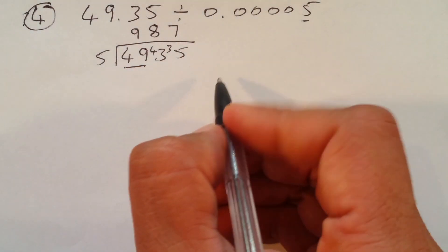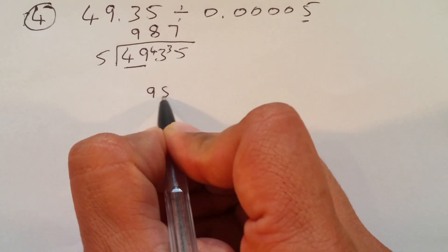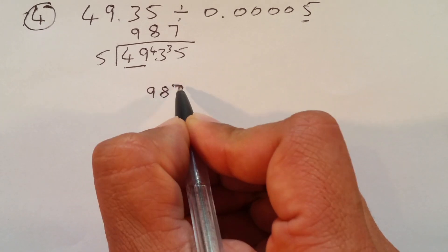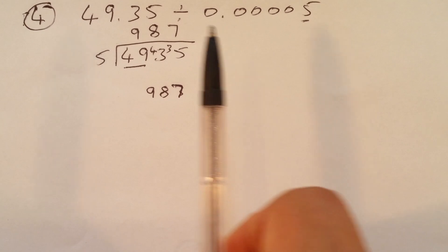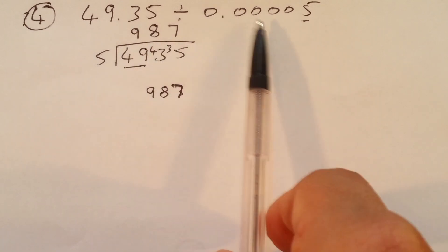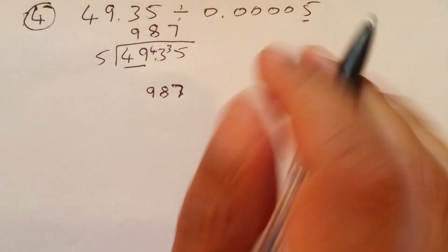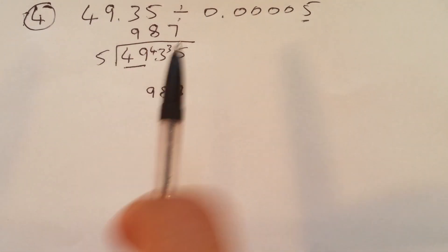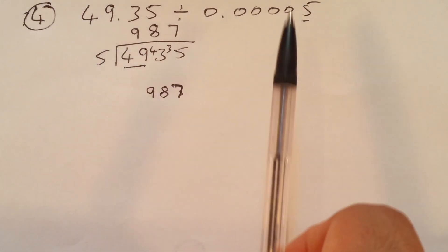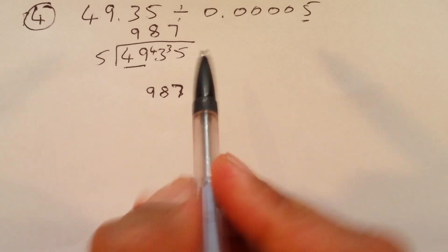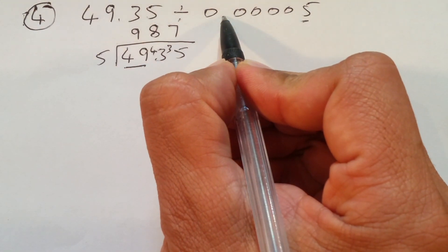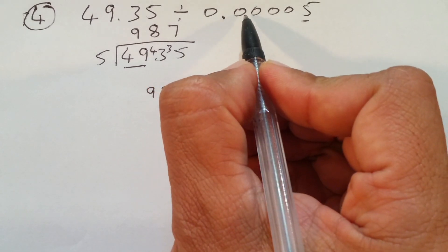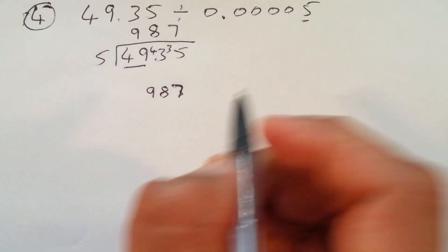So, the answer what we got is 987. Now, what you have to see here is the decimal placements here. After decimal, carefully listen to me what I'm doing now. After decimal, on your right hand side, you count after decimal how many numbers you have. 1, 2, 3, 4, 5.